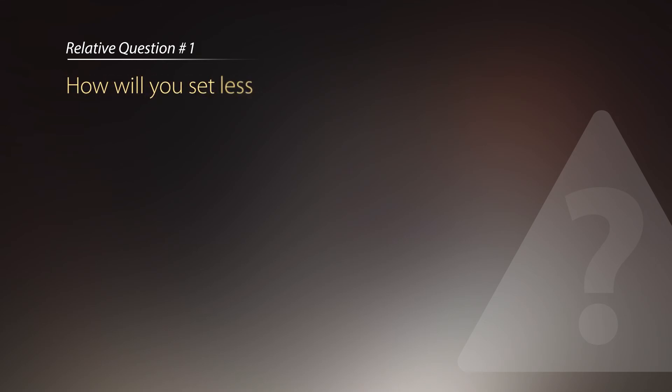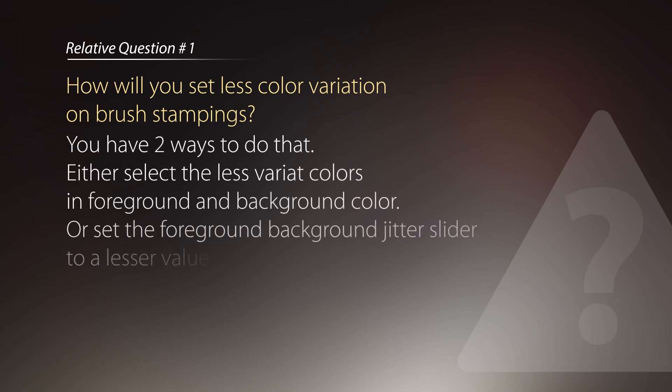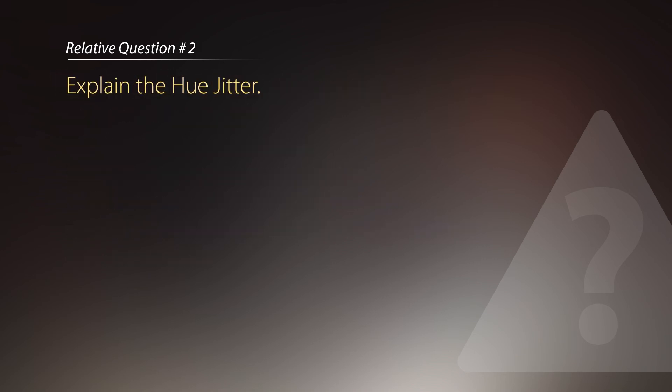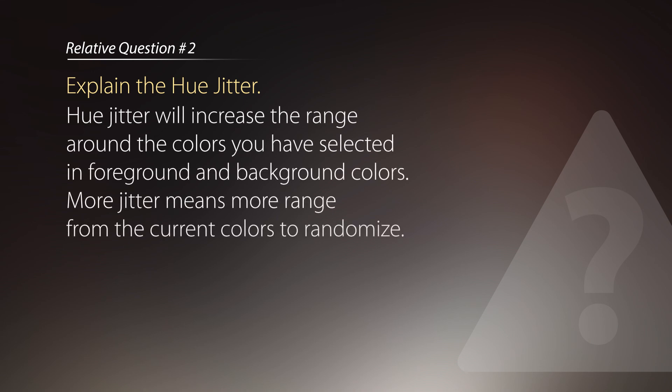Now let's talk about questions. The first question is: how will you set less color variation on brush stampings? You have two ways: either select less variant colors in foreground and background, or set the foreground background jitter slider to a lesser value. The next question: explain hue jitter. Hue jitter increases the color range around the colors selected in foreground and background. More jitter means a wider range of random colors.